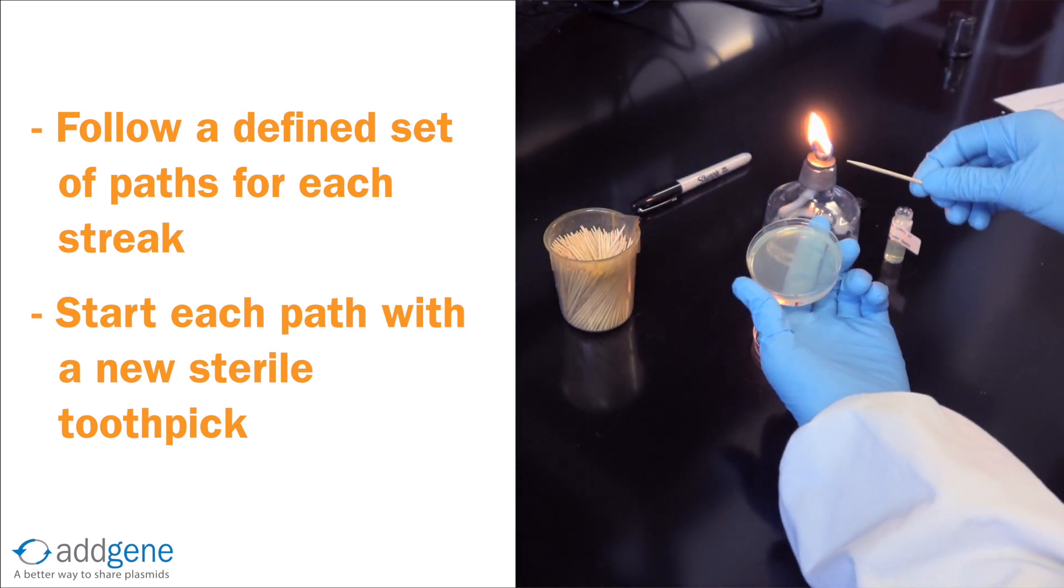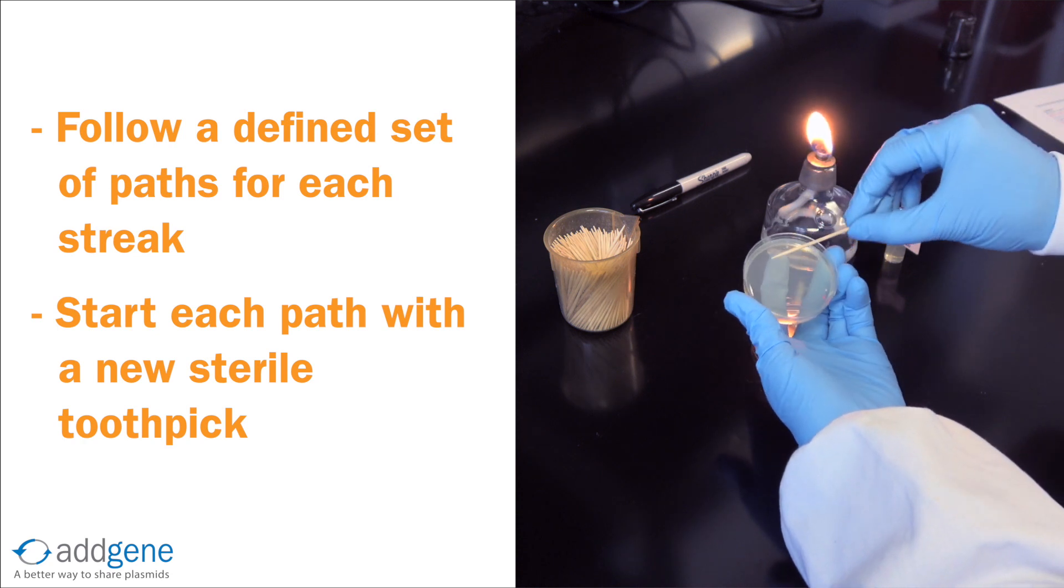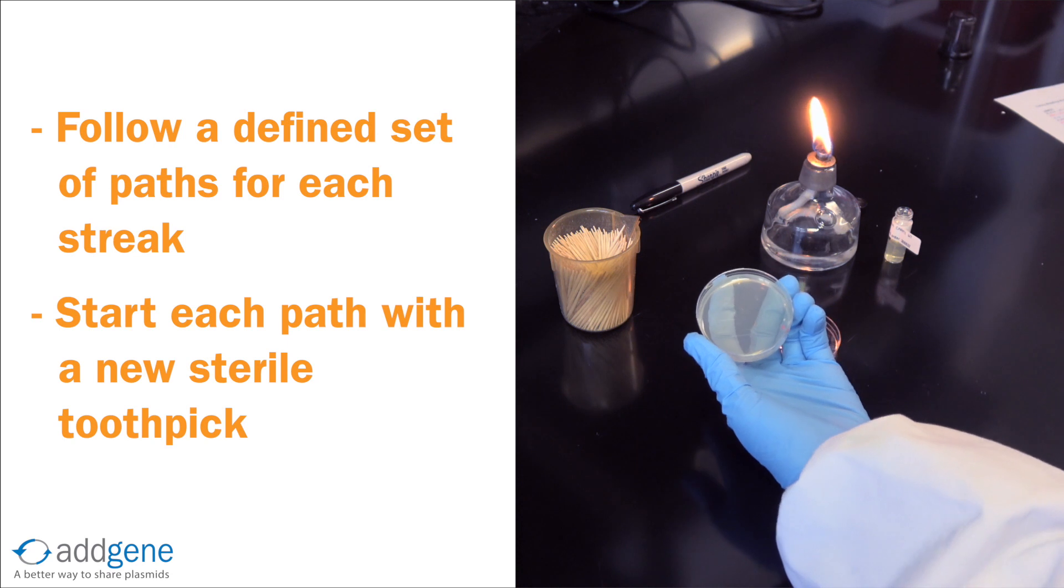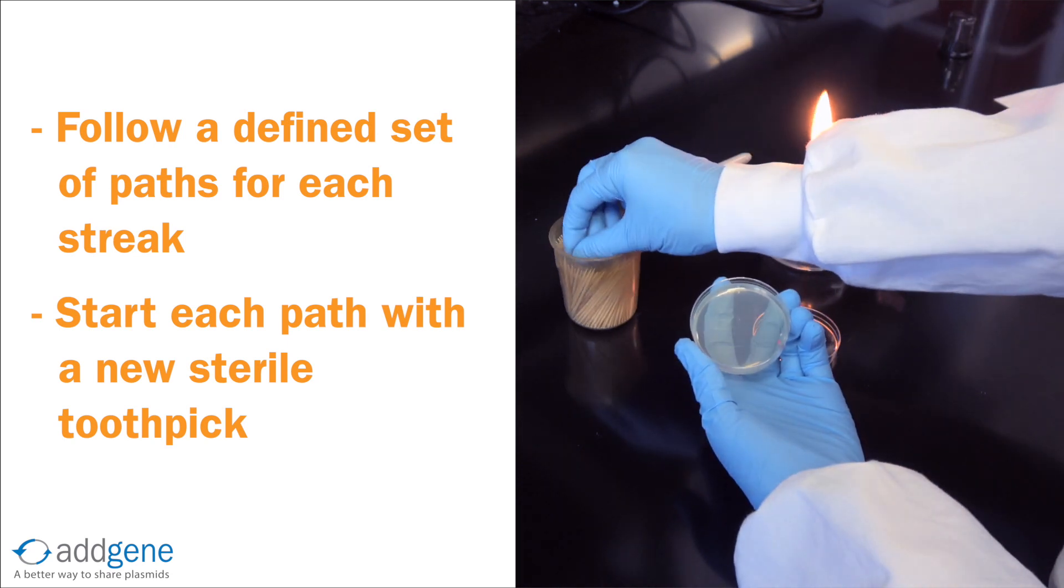We then dispose of the first toothpick, turn the plate, and use a new sterile toothpick to start streaking a new path from where we left off. Again, we streak over one-third of the plate and end the path near the edge.